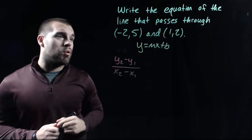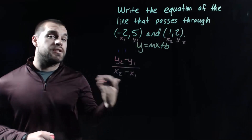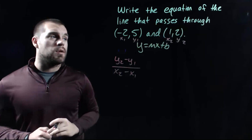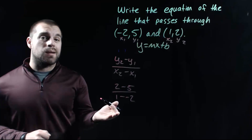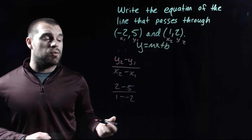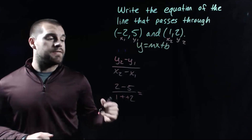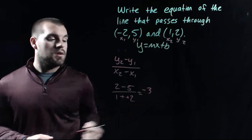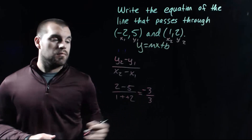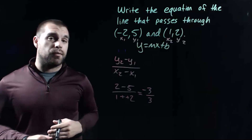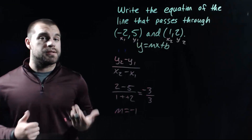I'm going to label my ordered pairs and start substituting that information into the formula. On the bottom we've got a double negative, so I'll turn that into addition. On top, 2 minus 5 gives us negative 3. On the bottom, 1 plus 2 is 3. Negative 3 divided by 3 is negative 1, so the slope is negative 1.